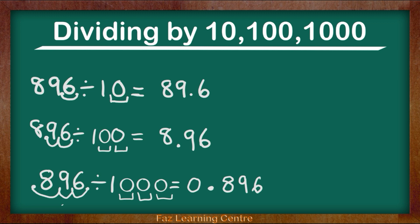Now let's look at the pattern. 896 divided by 10, we moved the decimal point one time because there was one zero. 896 divided by 100, we moved the decimal point two times and we made 8.96 because there were two zeros in the hundred. And with 896 divided by 1000, we moved the decimal point three times.